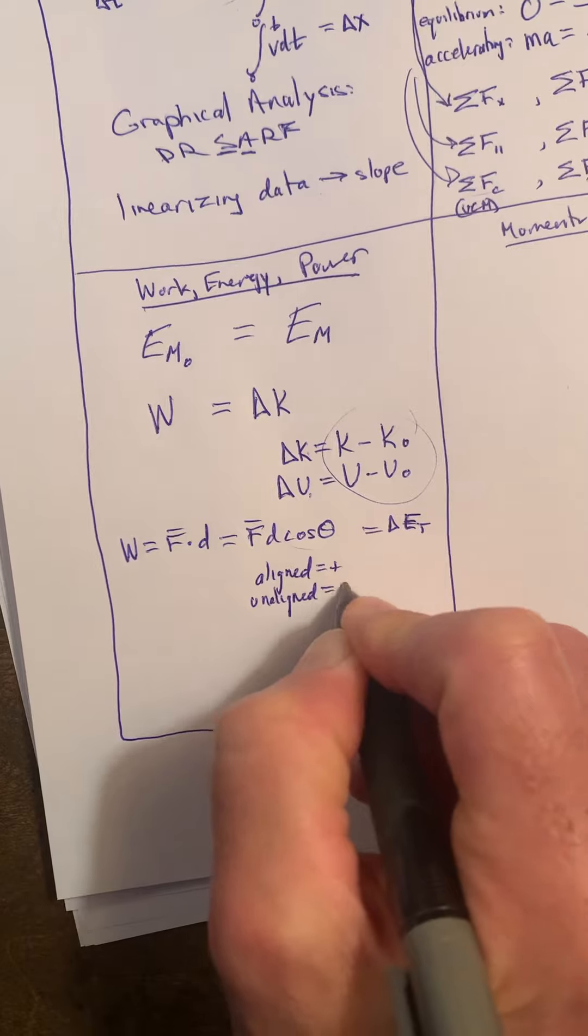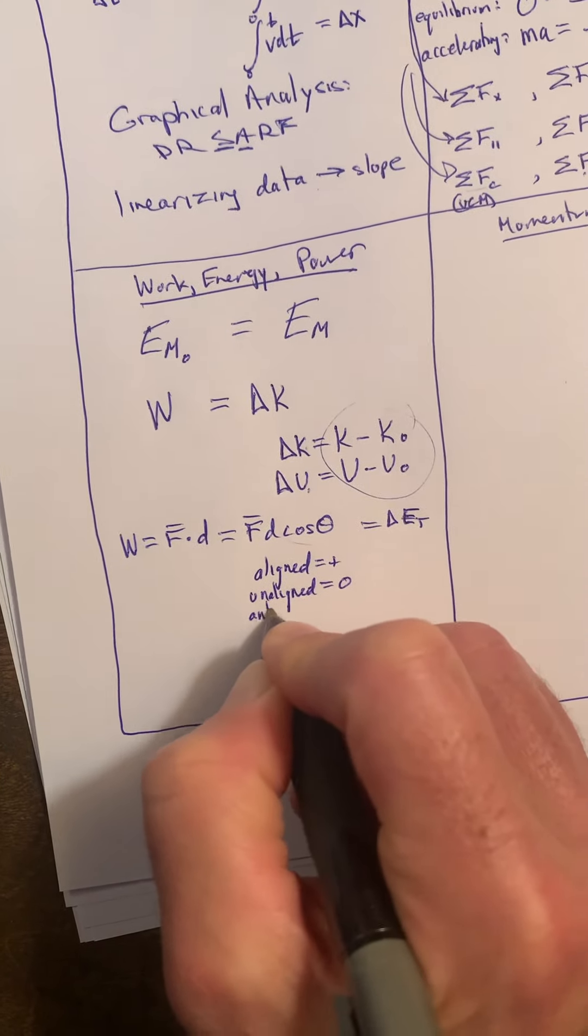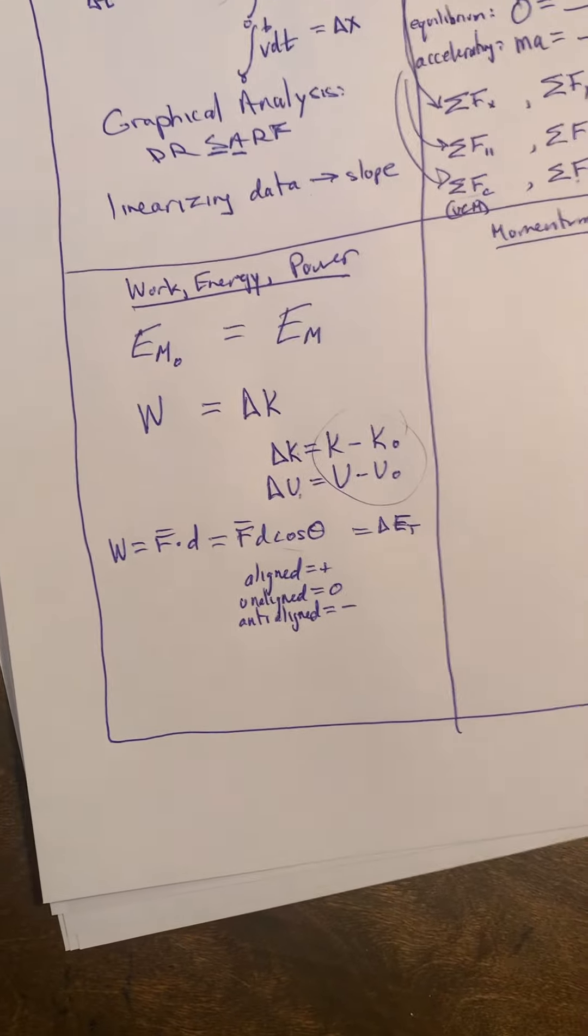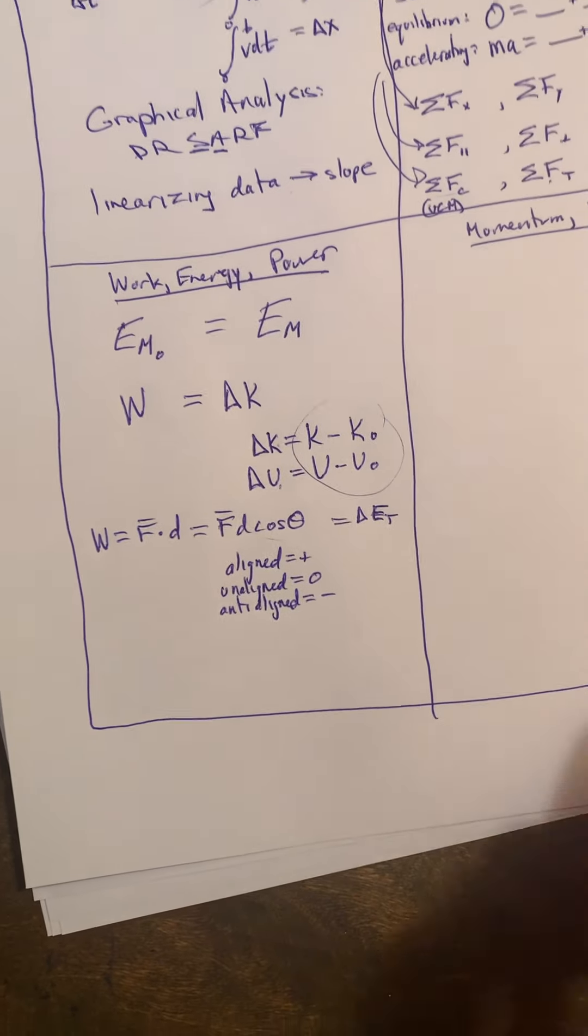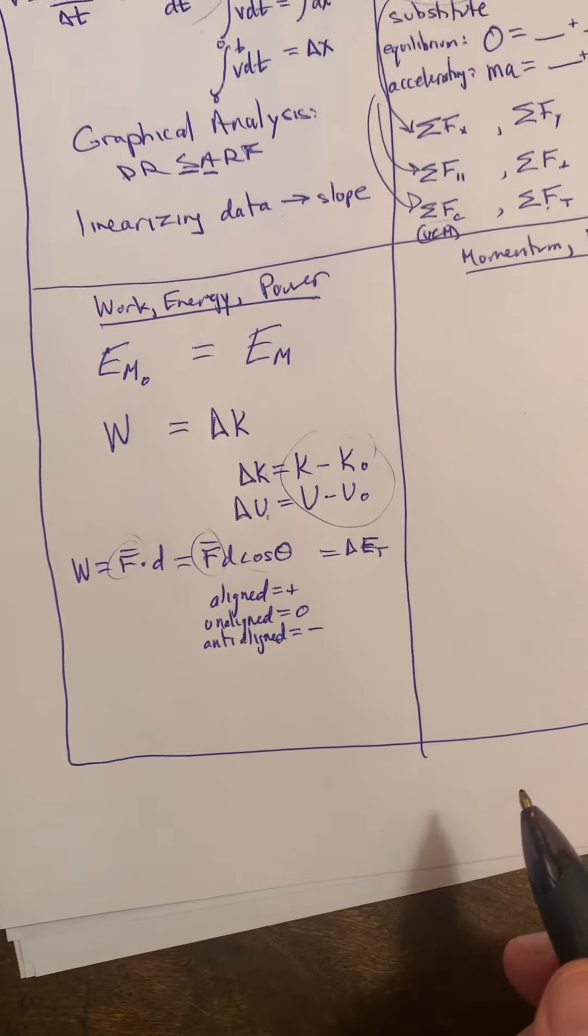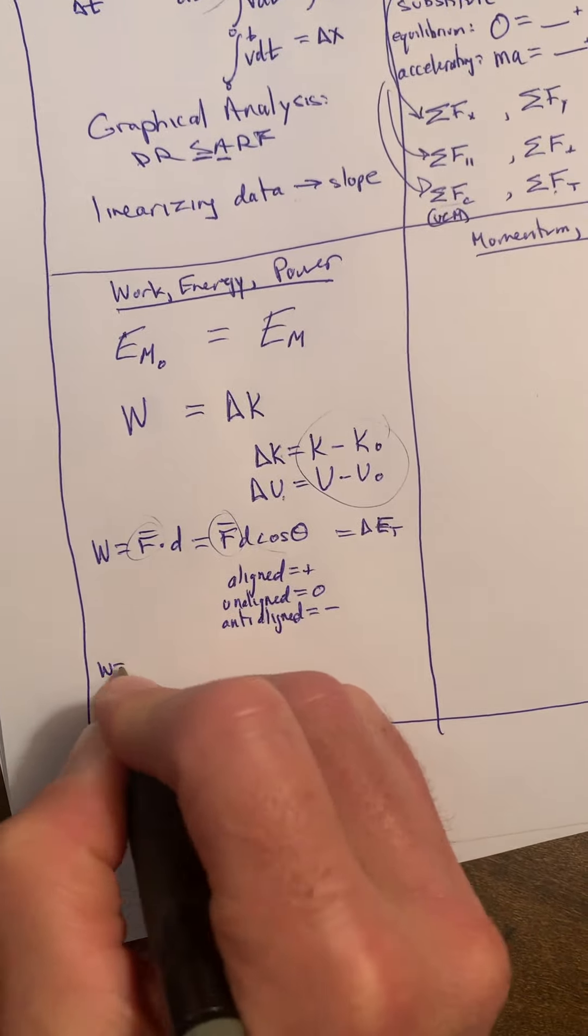And if they were anti-aligned, like opposite each other, this came out to negative, so you could have negative work. Beware that what we used in Regents, we said it but it wasn't written, is we used an average force.